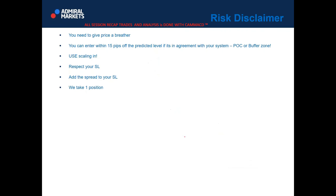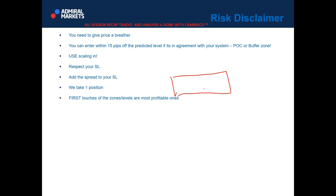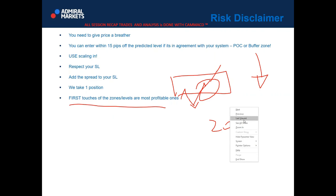We take only one position — whichever hits first — so it's either a positional trade or an alternative trade. First touches of zones or levels are the most profitable, so we always focus on trading those first touches. You can take a second or third touch, but you need to ensure the first touch didn't provide at least 20 pips. If the first touch provided at least 20 pips, the next touch could reverse the price.